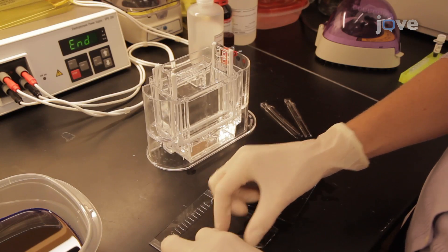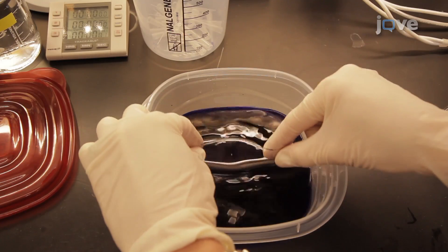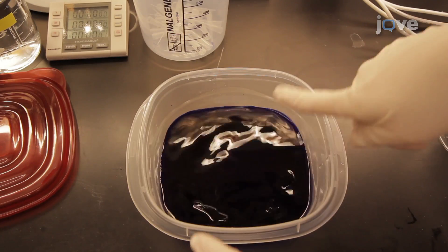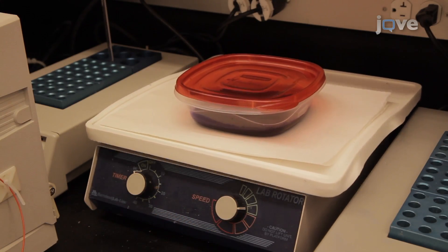When the gel has finished running, remove the gel from the cast and place it in a small plastic box with enough Coomassie Blue Stain to cover the gel. Stain the gel for 1 hour with gentle agitation.